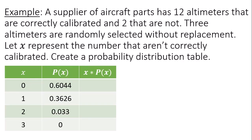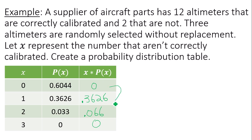We just created a probability distribution. Now let's find the expected value or mean of the distribution. Rather than pulling up technology, I can find the expected value just by looking at my table. The formula for expected value is to multiply each possible value by its probability — multiply across the rows. Zero times its probability gives zero. 1 times 0.3626 is 0.3626. 2 times 0.0330 is 0.066. And 3 times 0 is 0. Then I add all of those products together.